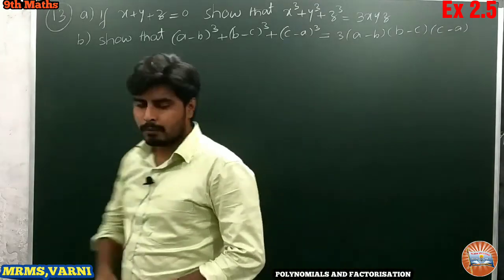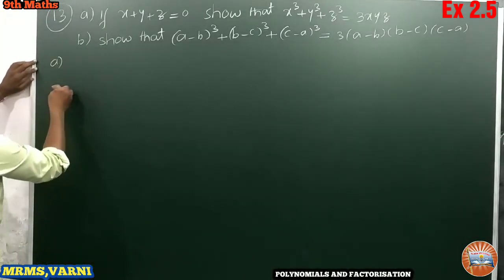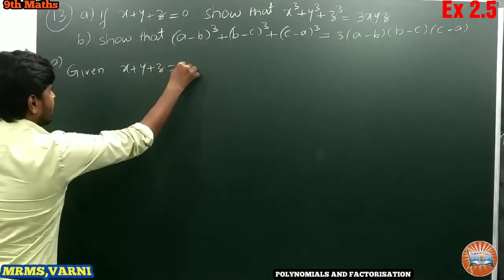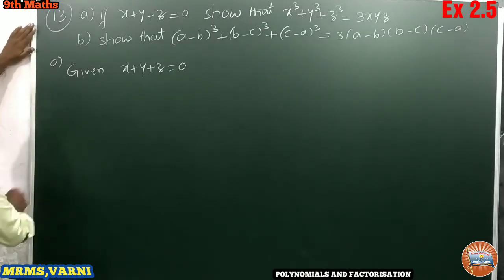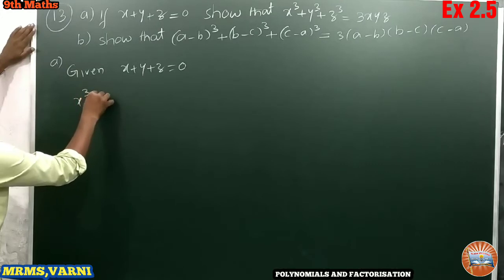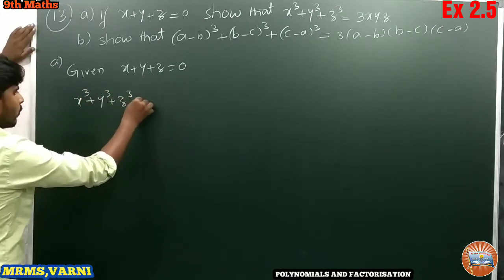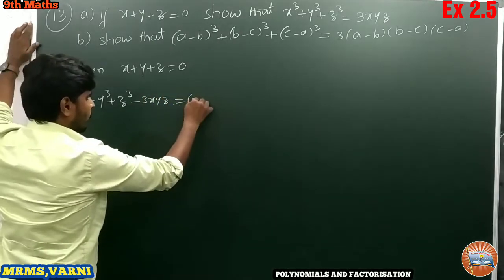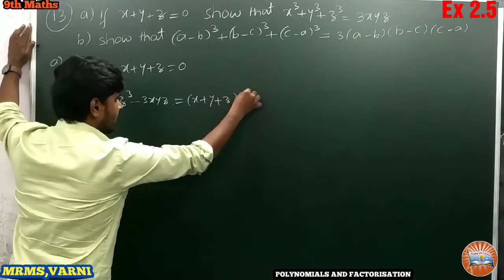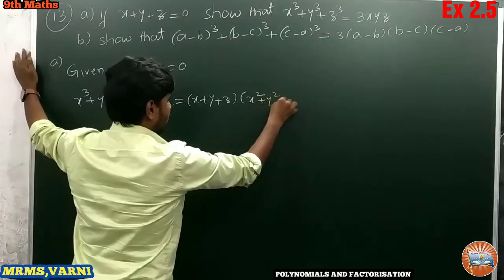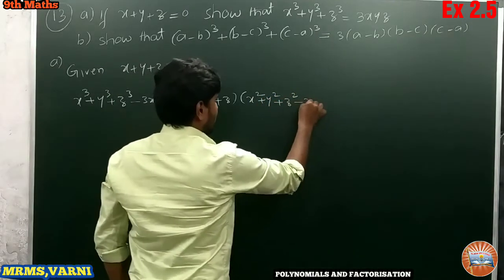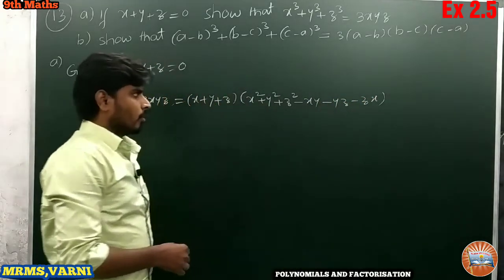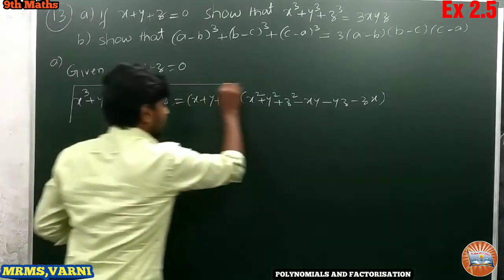Let us start with part A. Given: x plus y plus z is equal to 0. We have an identity: x cube plus y cube plus z cube minus 3xyz is equal to x plus y plus z, into x square plus y square plus z square minus xy minus yz minus zx. This is the identity we have.